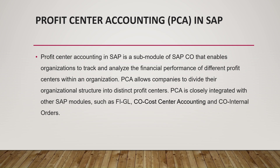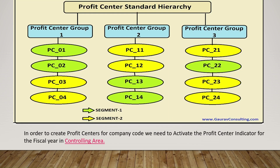This is the standard hierarchy of profit center. We have different profit center groups — profit center group 1, 2, 3 — and under each group we have different segment levels: segment 1, segment 2, with further hierarchies accordingly. In order to create profit centers for a company code, we need to activate profit center indicators for the fiscal year in controlling areas.